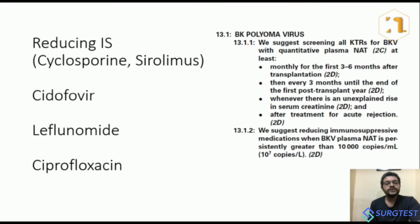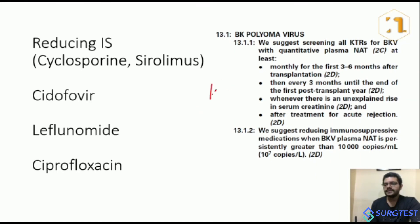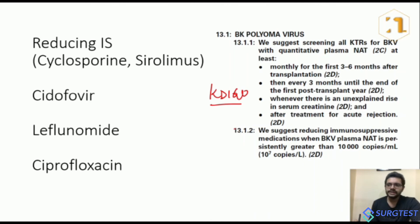There is no specific antiviral treatment for BK virus nephropathy. Per KDIGO guidelines, all kidney transplant recipients should be screened for BK virus monthly for the first three to six months after transplantation, then every three months in the first transplantation year, whenever there is an asymptomatic rise in creatinine, or after treatment for acute rejection. These are the four scenarios where testing is recommended, with a high level of evidence.